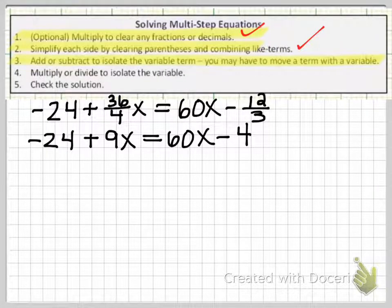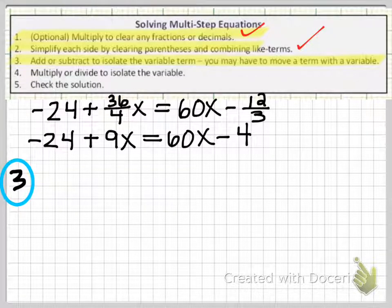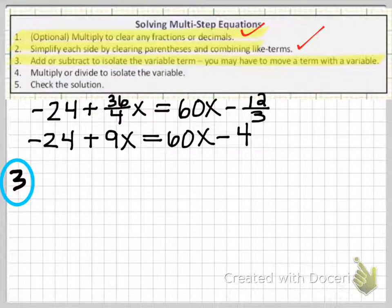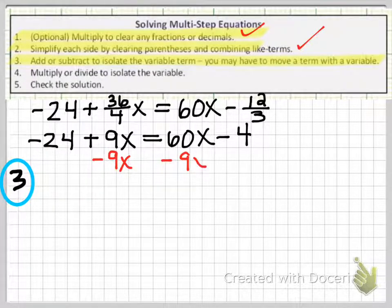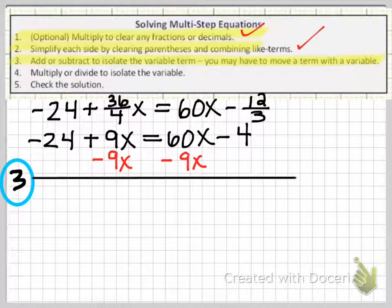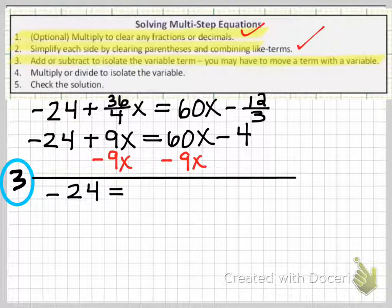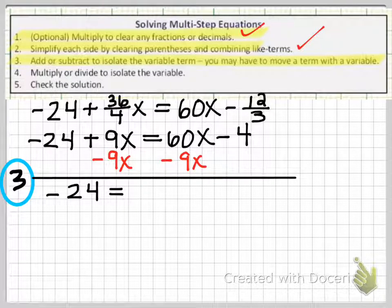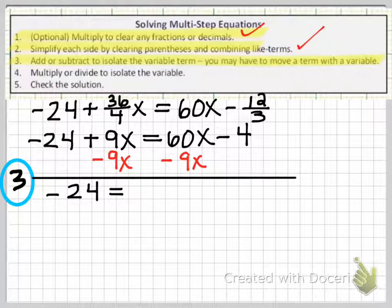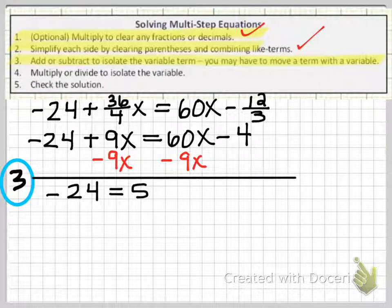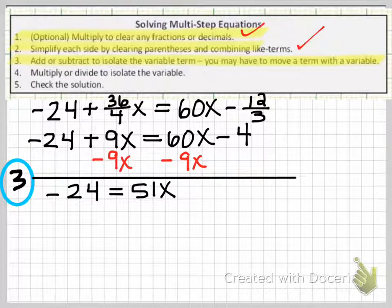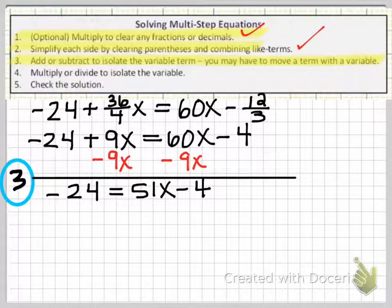Now I'm going to move on to step 3. This is where I'm going to get the variable by itself. So I do need to complete step 3. The first thing I want to do is collect the variables on the same side of the equation. I'm going to choose to collect them on the right side because I want to keep my variable coefficient positive. So by subtracting 9x from both sides, that allows me to keep my variable term at positive 51x. After I subtract 9x from both sides, the left side only has the constant -24 remaining because the positive 9x minus 9x becomes 0x, and I don't have to write that term. And then on the right side, I get 51x because 60x - 9x leaves me with 51x, and then I still have that -4.